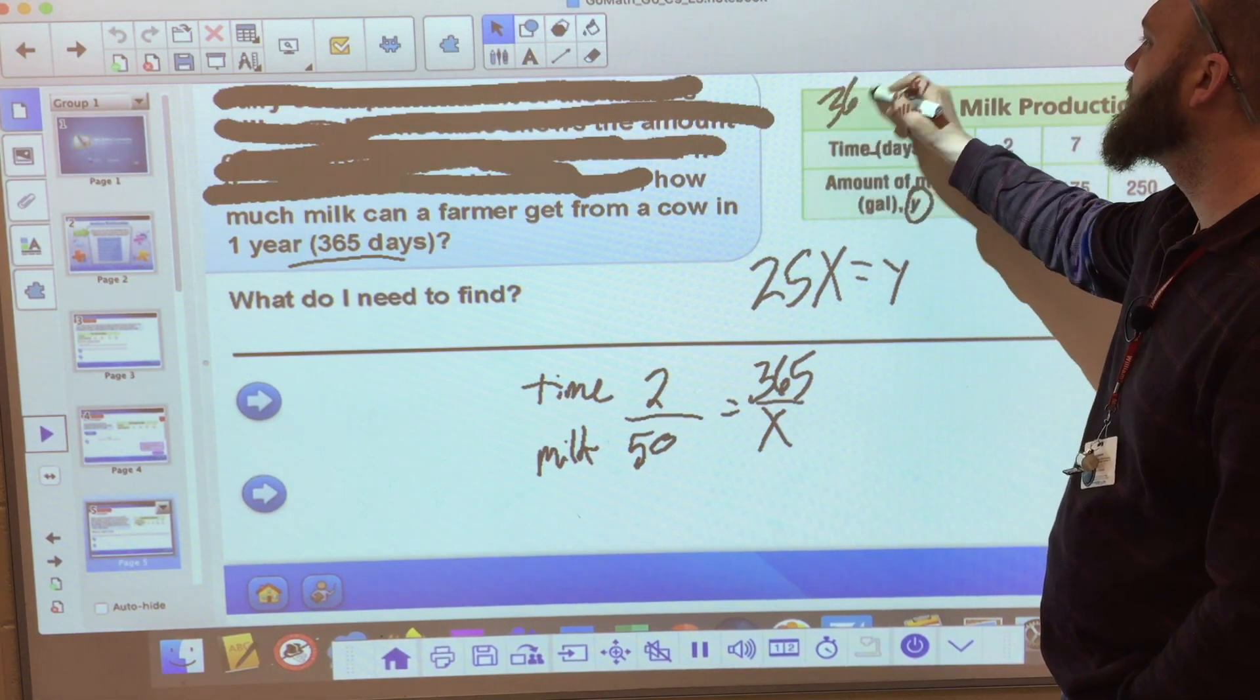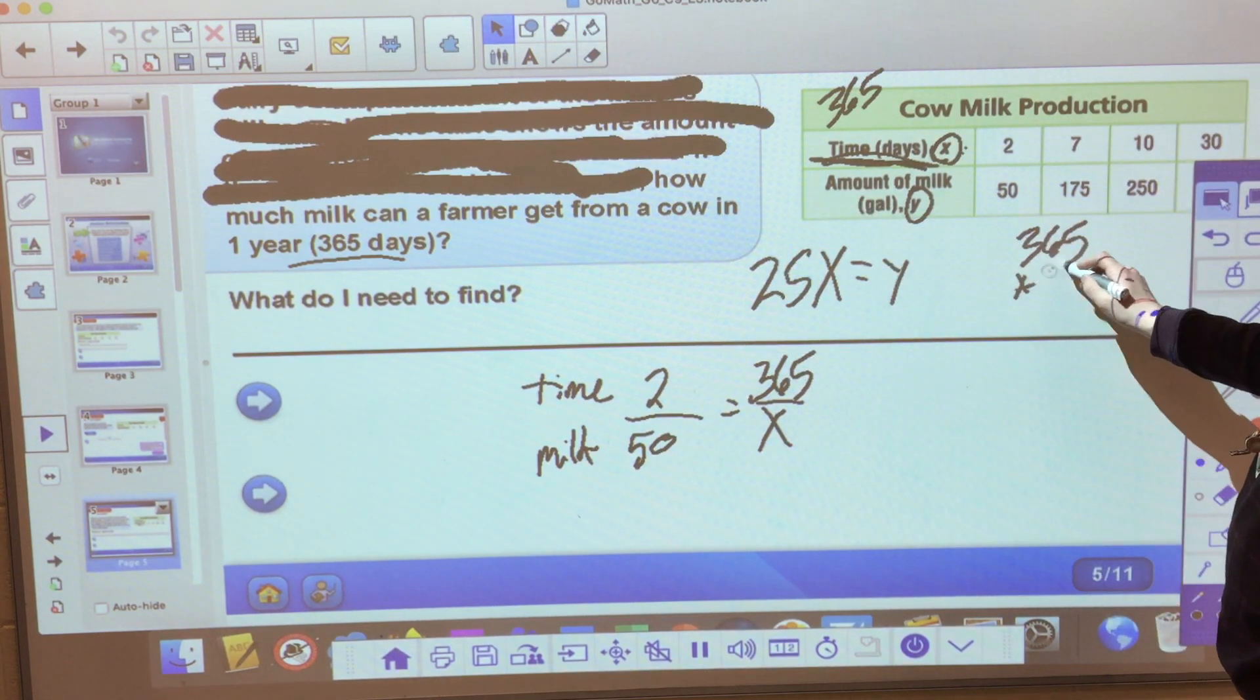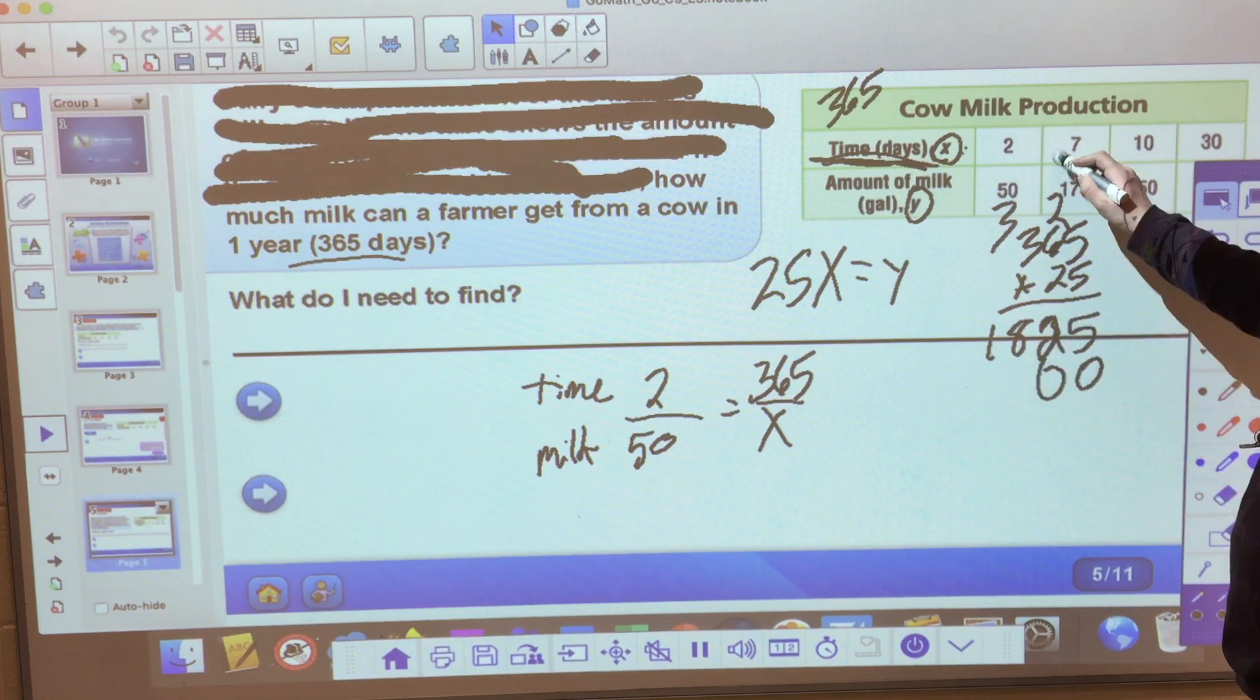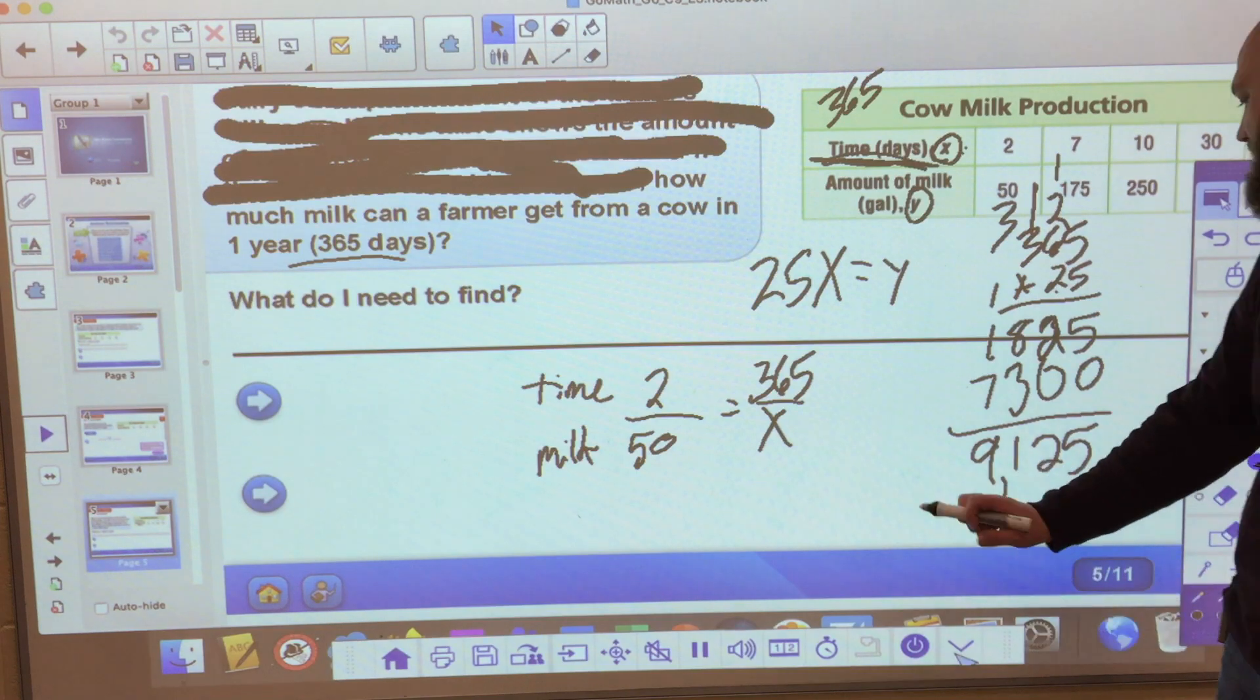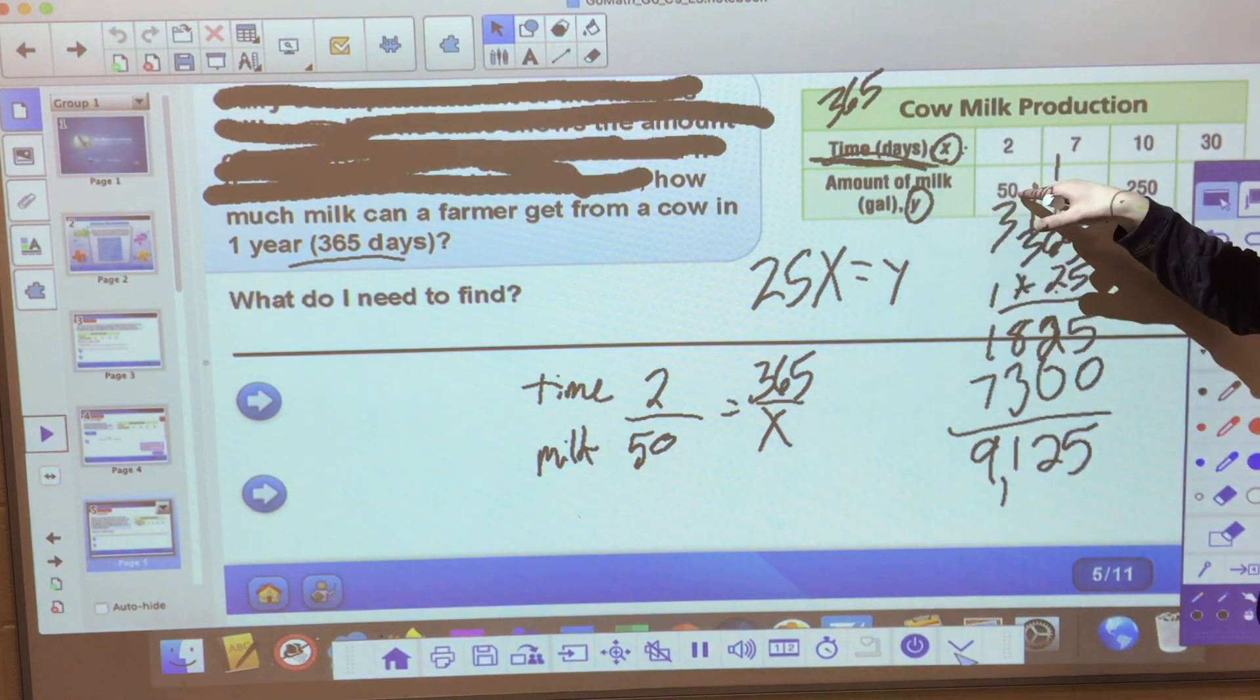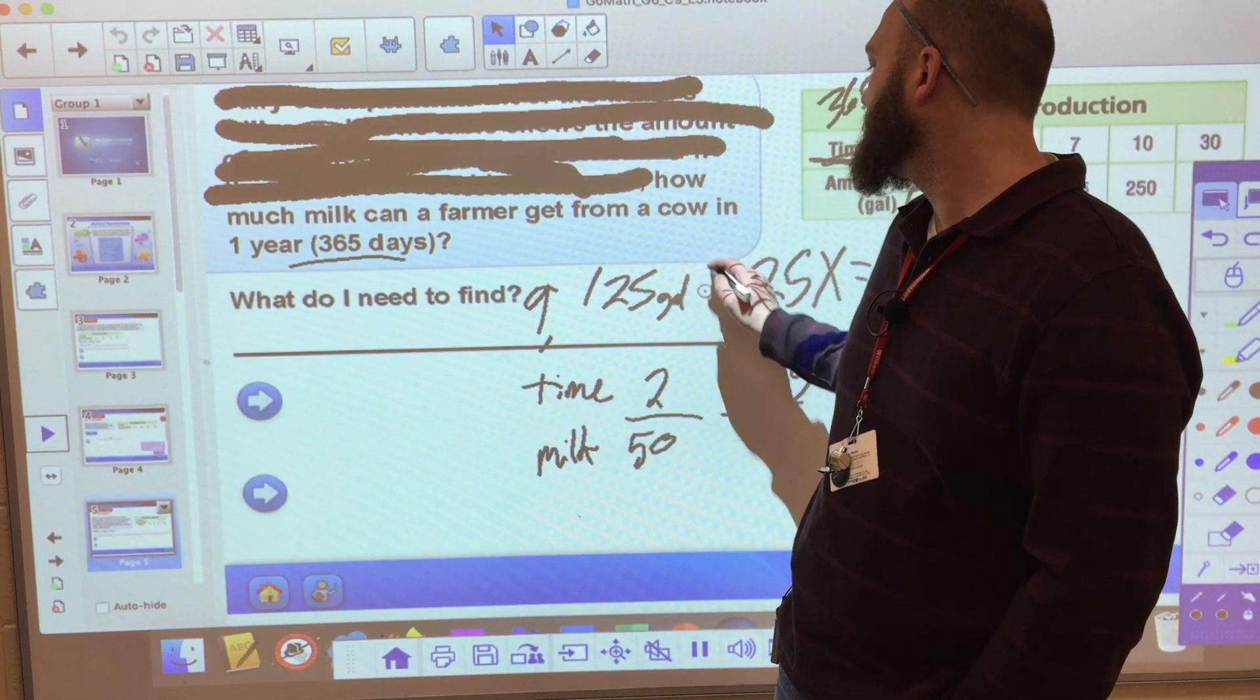So I get 365, because that's my time in days. That's my x right here, times 25. And I get 9,125. That is a lot of milk. So 9,125 gallons. So if I can get 25 gallons in a year, the amount of milk in gallons, 50 gallons every two days. So 25 gallons a day for an entire year, that's going to give me a grand total of 9,125 gallons for the year.